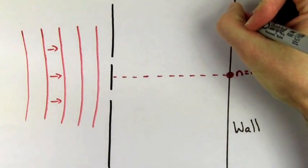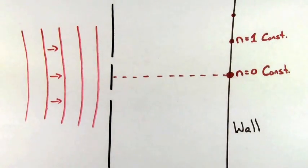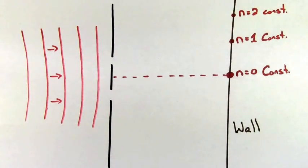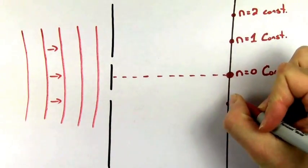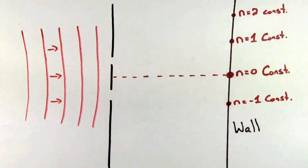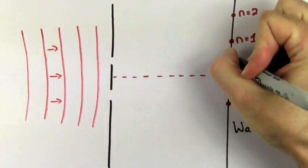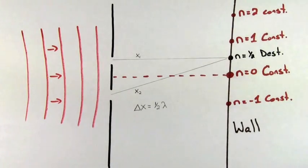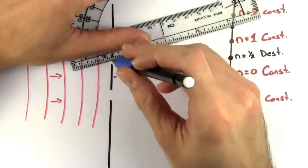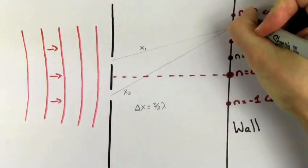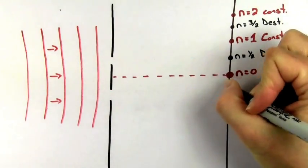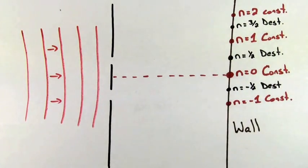Similarly, for the next bright spot, the wave from the bottom slit has to travel two wavelengths farther than the wave from the top slit, so we call this the n equals two constructive point, or the second order maximum. For the bright spot below the central maximum, the wave from the bottom slit has to travel one wavelength less than the wave from the top slit, so we call this point the n equals negative one maximum. For the dark spot above the central maximum, the path length difference is equal to a half wavelength, so this is the n equals one half destructive point, or the n equals one half minimum. For the next dark spot above that, the path length difference is equal to three halves of a wavelength, so we call this the n equals three halves minimum. And for the dark spot underneath the central maximum, the path length difference is negative one half of a wavelength, so we call this the negative one half minimum.